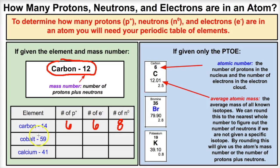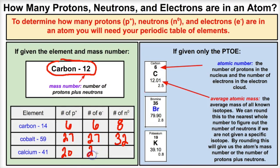For cobalt-59: cobalt has atomic number 27, so it has 27 protons and 27 electrons. Take the mass number 59 minus 27 to get 32 neutrons. For calcium-41: calcium is number 20 on the periodic table — 20 protons and 20 electrons. Take 41 minus 20 to get 21 neutrons.